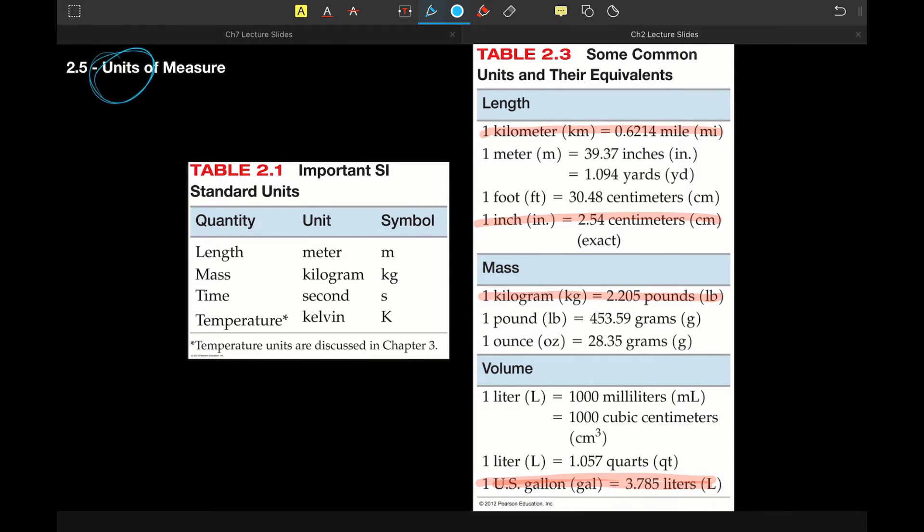Because obviously the number 2.5 has no meaning unless we add some units to it. So 2.5 pennies, not so useful. Two and a half dollars, not so bad. Two and a half million dollars, that would be awesome.